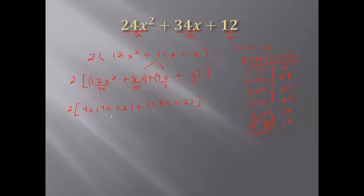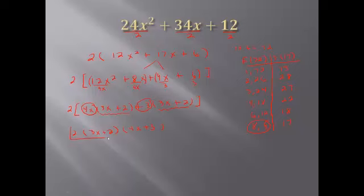The key to grouping is having the same binomial from both groups. Since both groups give 3x plus 2, we write that binomial once, and then in another set of parentheses write the leftover factors: 4x plus 3. So the factored form of the trinomial is 3x plus 2 times 4x plus 3, giving a final answer of 2 times (3x + 2)(4x + 3).